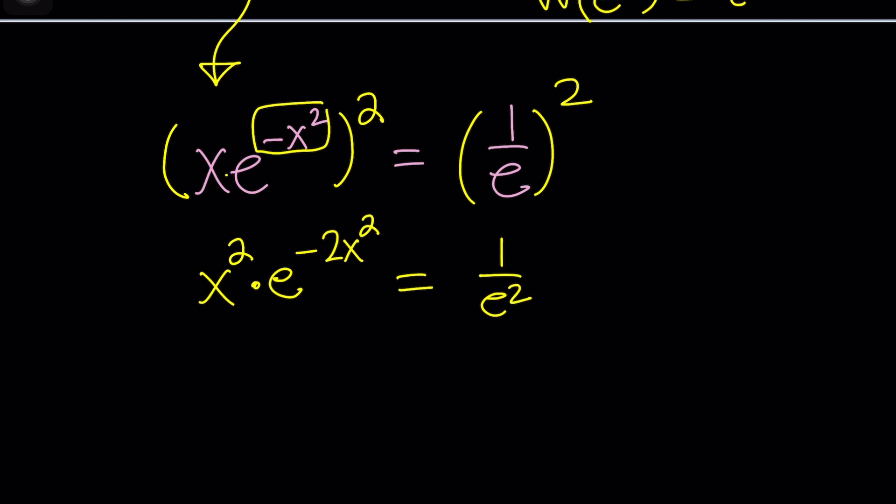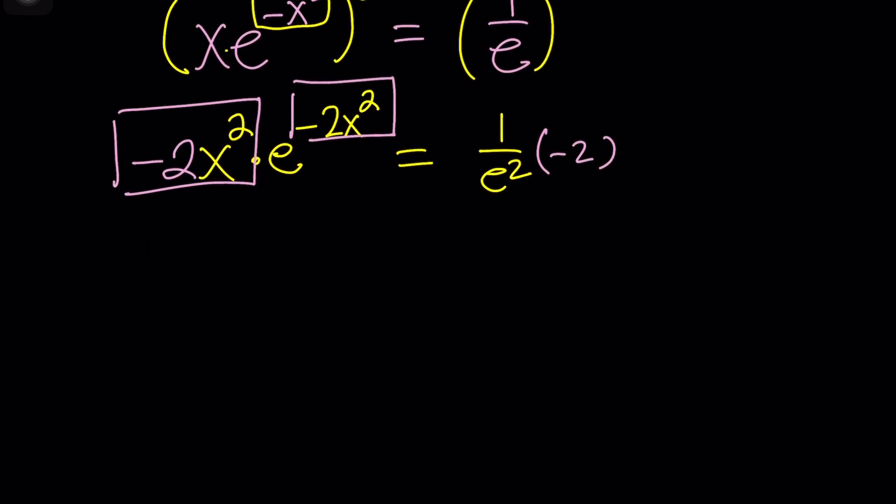We're getting closer right? Now all I need is a negative two on the left because if only I had negative two x squared times e to the power negative two x squared. Things would be awesome right? So all I have to do is then multiply the right hand side by negative two as well. Now we get our t. This is our t times e to the t. Do you see what I see? Okay. Do you t what I t? Do you like t? I like t.